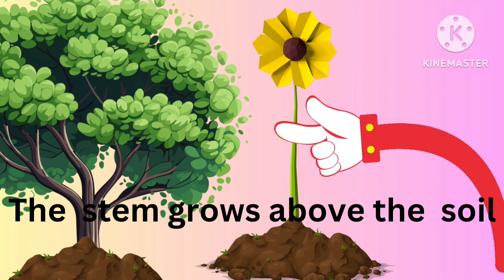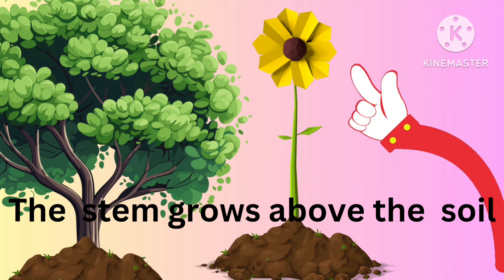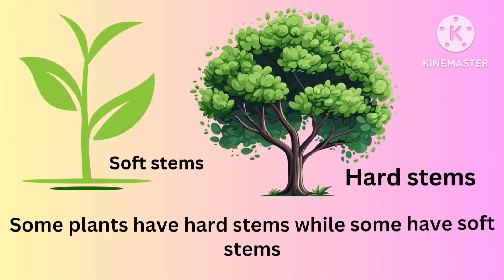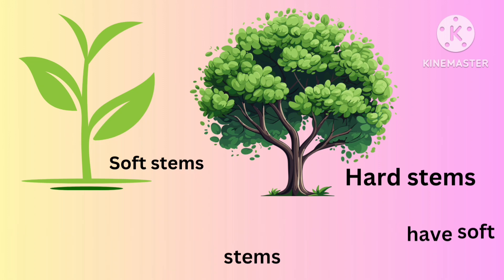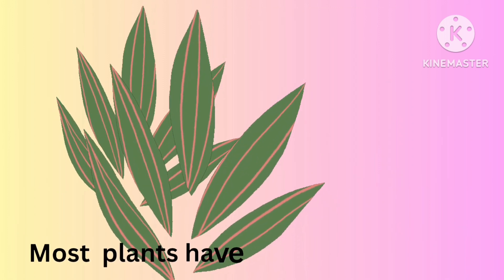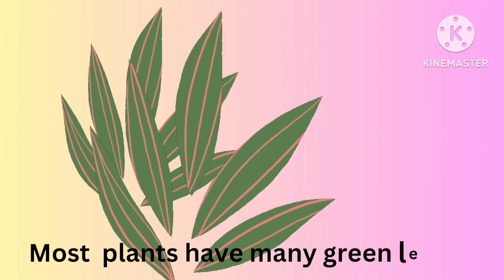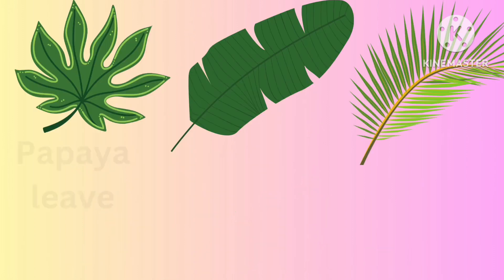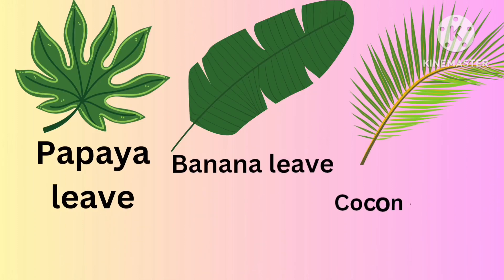The stem grows above the soil. Some plants have a hard stem while some have a soft stem. Most plants have many green leaves.